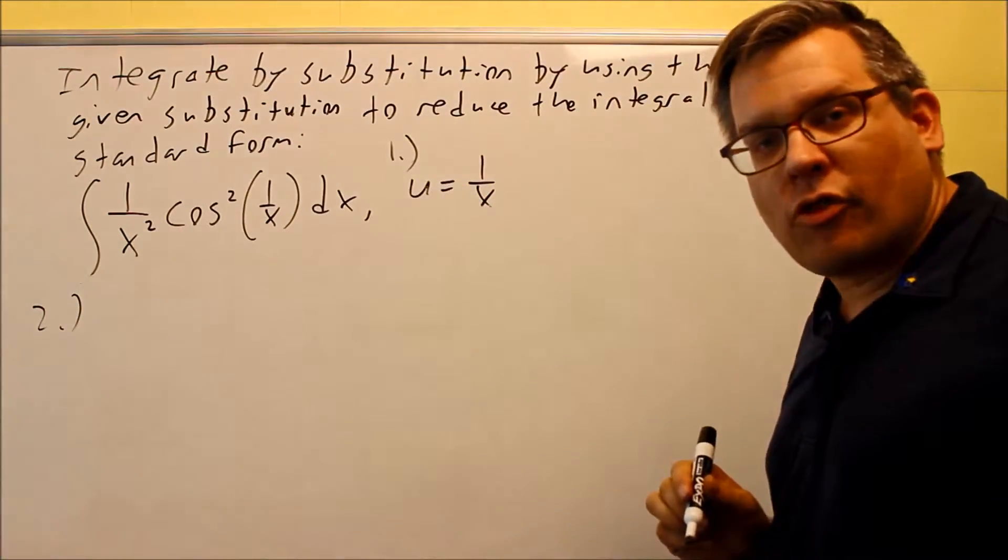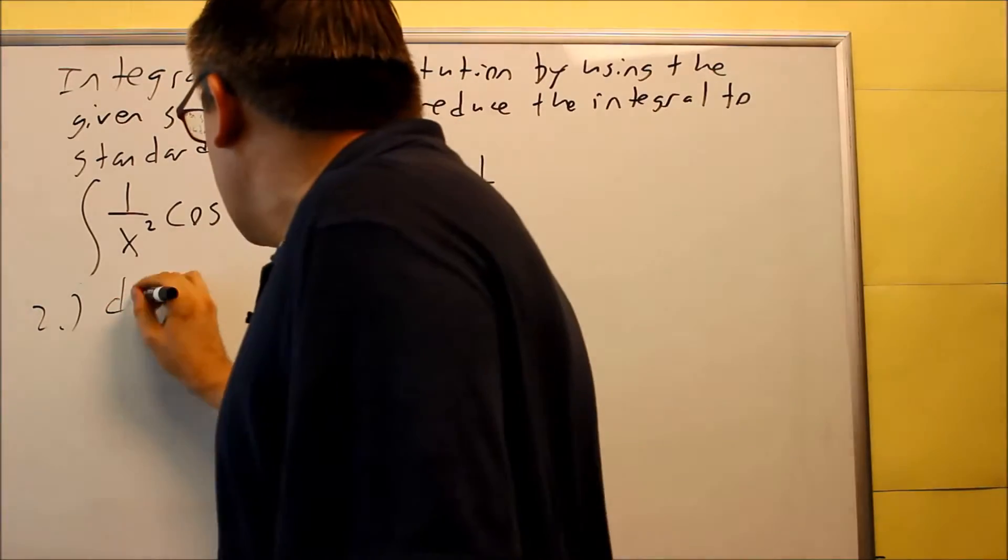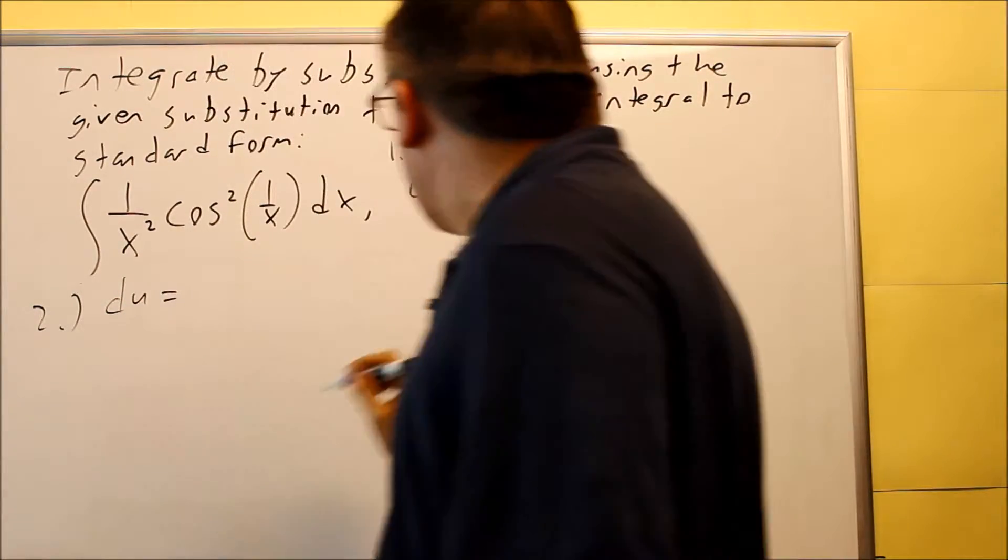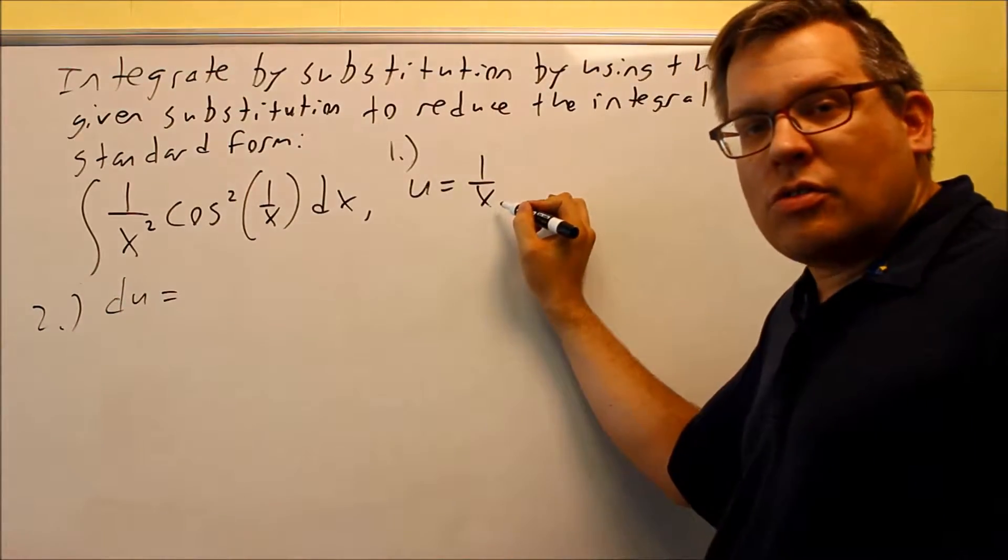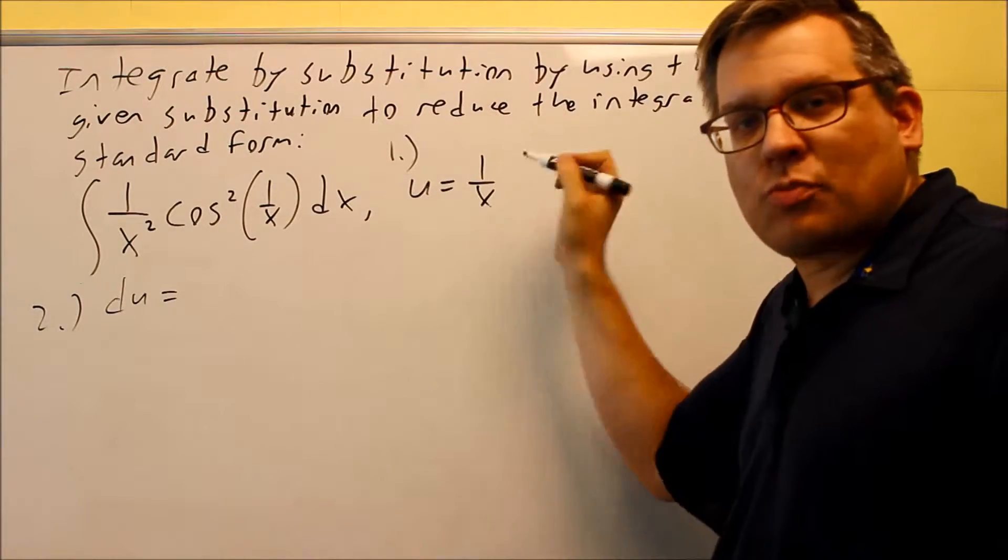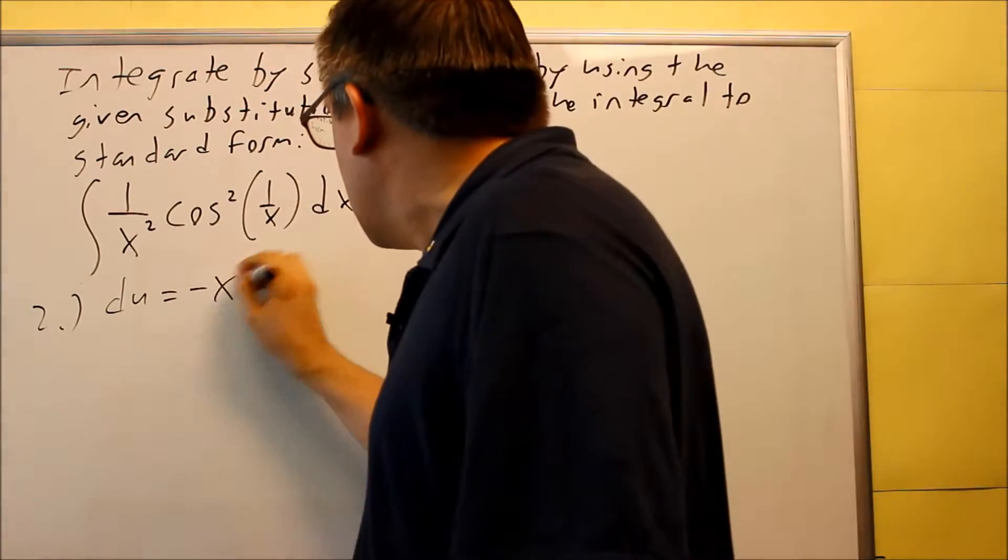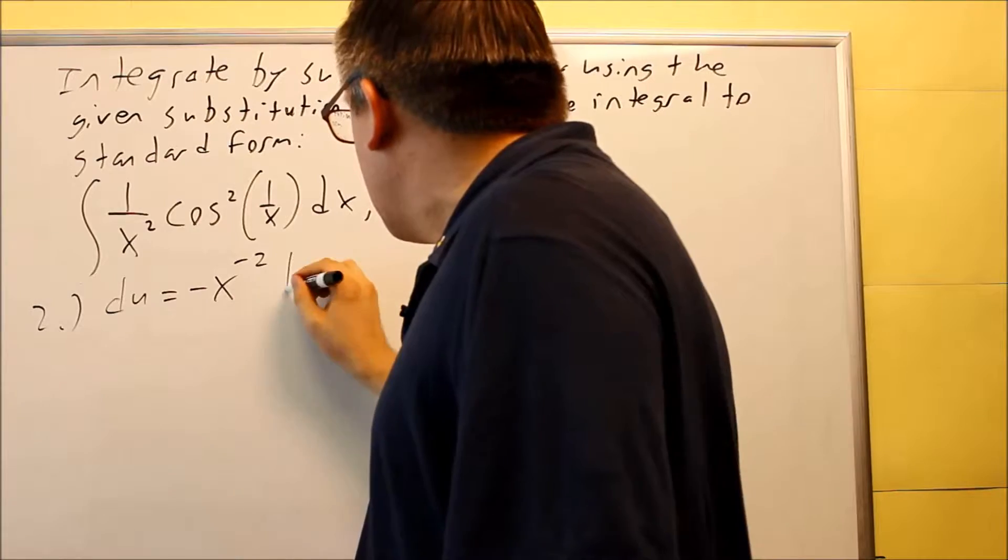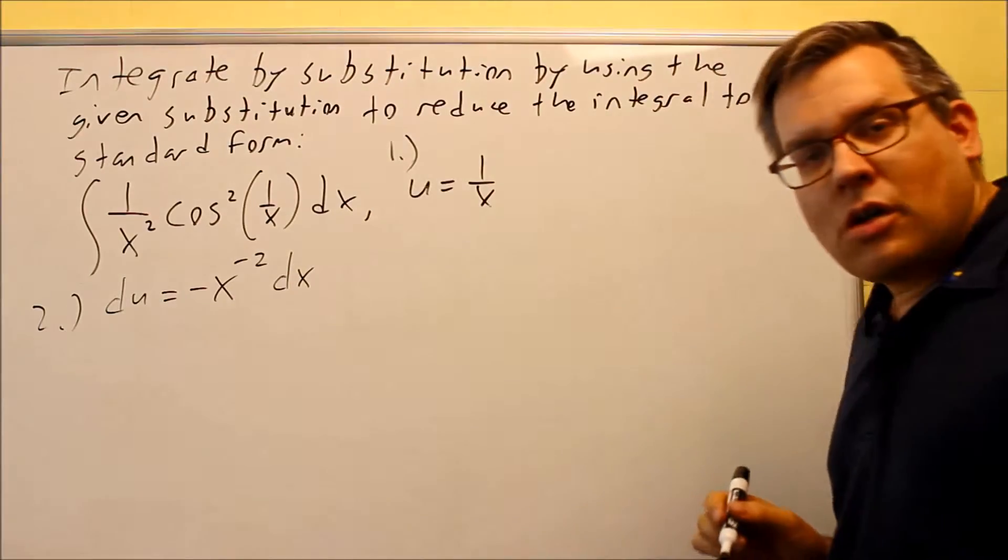Step 2 you're going to take the derivative of both sides. We get du is equal to this one. We can turn that into x to negative 1, so we can use power on that. Negative is going to come down, subtract 1 from the exponent, and we get a dx left over.